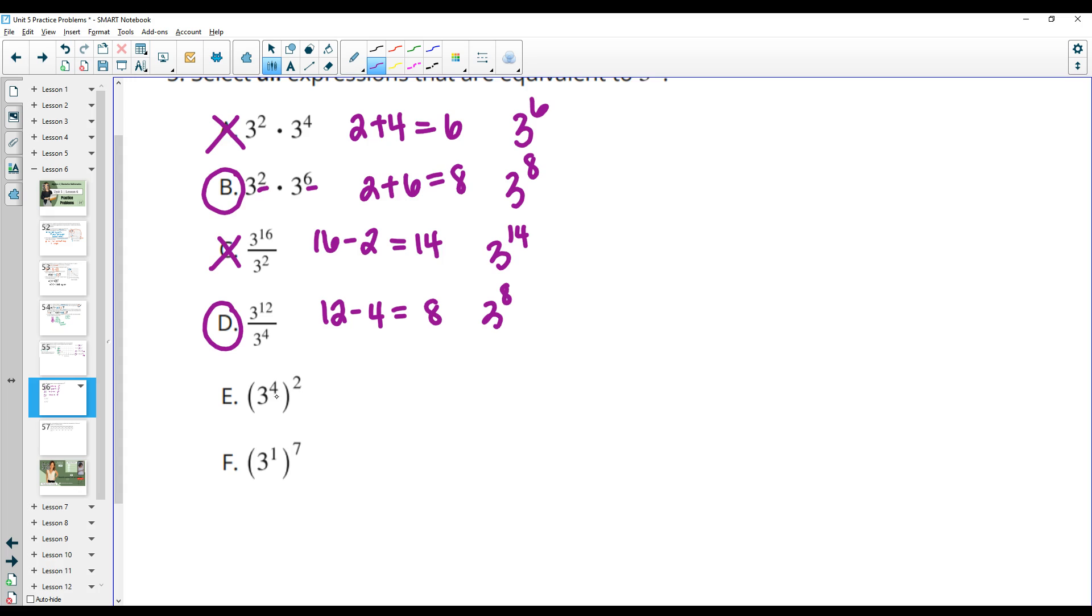When you have a power of a power, so we have this parenthesis here, then we multiply the exponents. So we're multiplying 4 and 2 together, which gives us 8. So this is 3 to the eighth. So this one is good. Where this one would be 1 times 7, which gives us 7. So 3 to the seventh is not equivalent to 3 to the eighth.